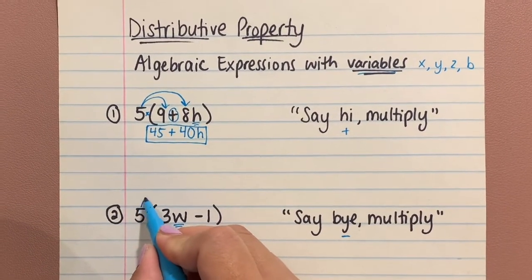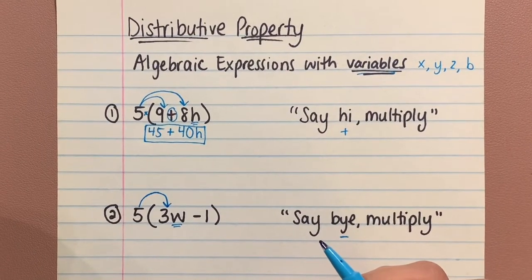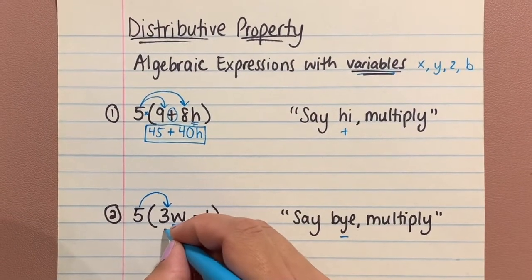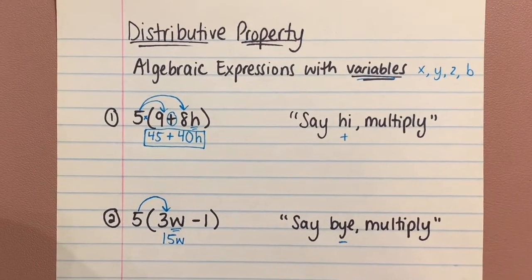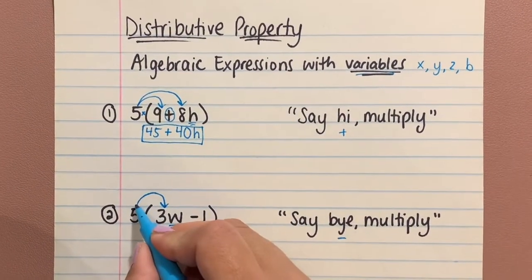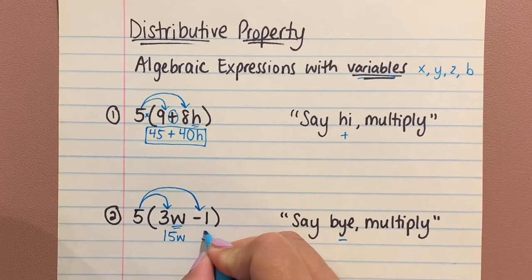The five, when it comes into the house, is going to say bye, multiply, to the three, which is 15. And that little W stays alongside of it. The five is also going to say bye to the one—say bye, multiply.